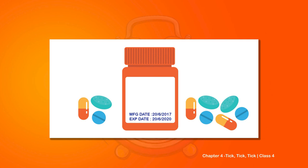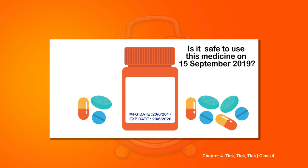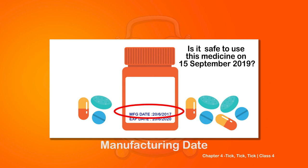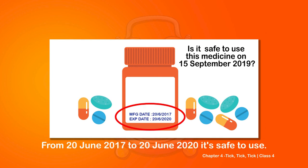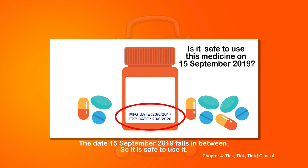Now observe this image. Is it safe to use this medicine on 15th September 2019? Let us check. The manufacturing date is June 2017 and the expiry date is June 2020. So from June 2017 to June 2020 it is safe to use. The date 15th September 2019 falls in between, so it is safe to use it.